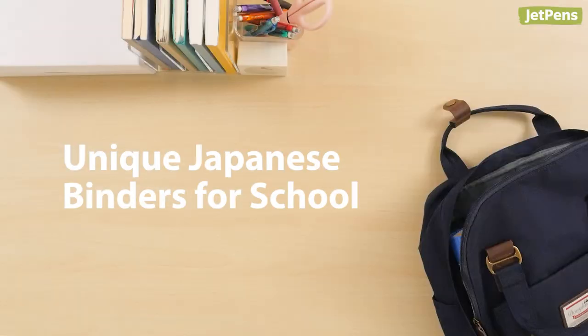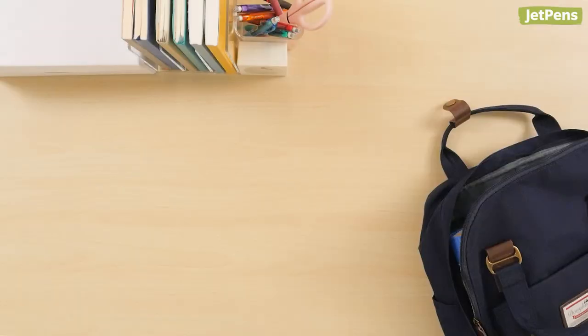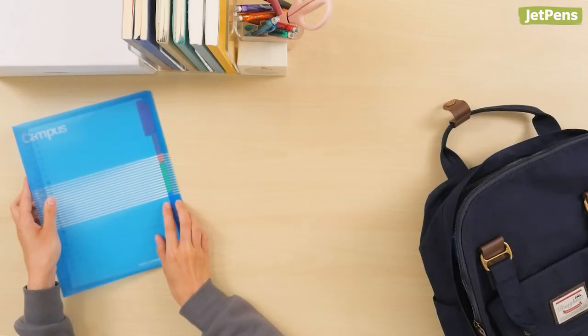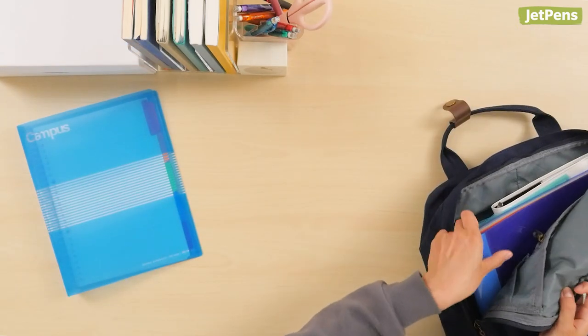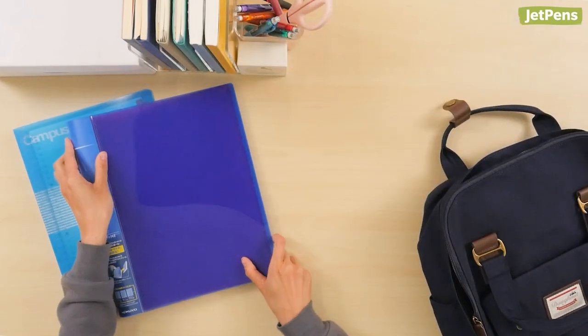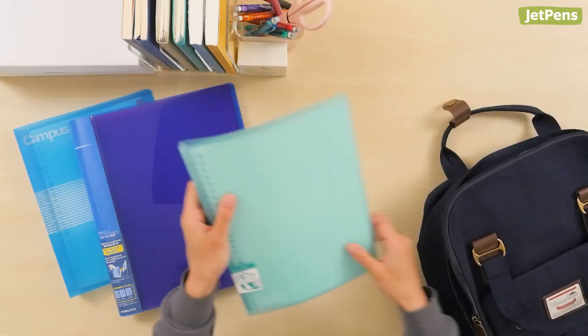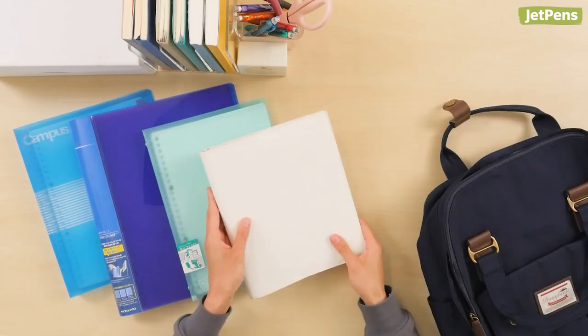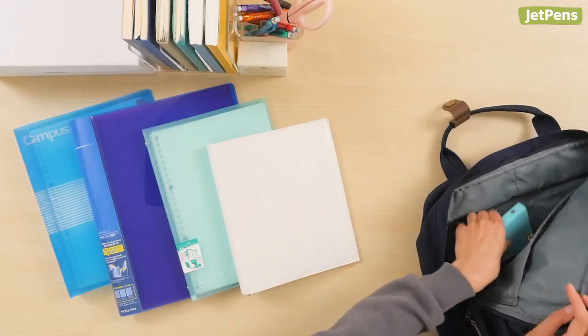Unique Japanese binders for school. Binders are a great way for students to stay organized since they allow for papers to be easily rearranged or separated with dividers. Japanese brands offer binders with unique features that make them more convenient than your average binder. Keep watching to see our top picks. You can find all of these products at JetPens.com.